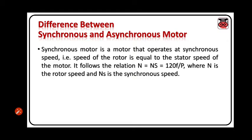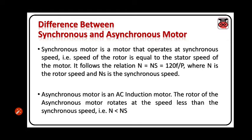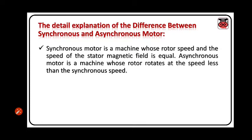Synchronous motor is a motor that operates at synchronous speed, meaning the speed of the rotor is equal to the stator speed of the motor. It follows the relation N = NS = 120F / P, where N is rotor speed and NS is the synchronous speed. Asynchronous motor is an AC induction motor; the rotor of the asynchronous motor rotates at speed less than the synchronous speed, that is N less than NS. A synchronous motor is a machine whose rotor speed and the speed of stator magnetic field is equal, while an asynchronous motor is a machine whose rotor rotates at speed less than the synchronous speed.